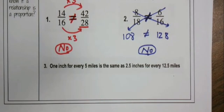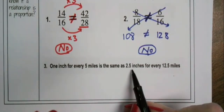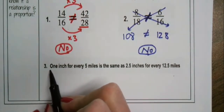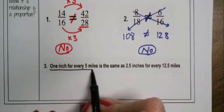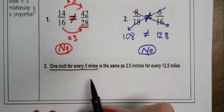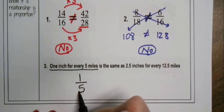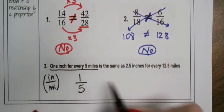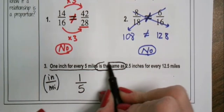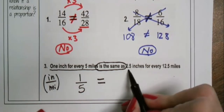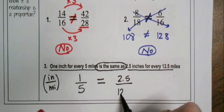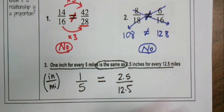For number three: one inch for every five miles is the same as 2.5 inches for every 12.5 miles. I wrote this as inches over miles, so I need to be sure the other one looks the same — equal to 2.5 inches for every 12.5 miles. So is this true?